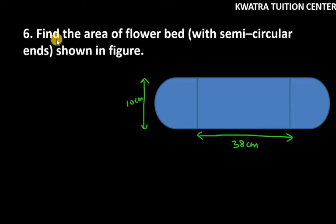Hello everyone, let's start with question number six. It says find the area of a flower bed. So this represents a flower bed. We have a rectangle in it and we have semicircular ends in it, so we have to basically find the area of the whole flower bed. You can see that this figure